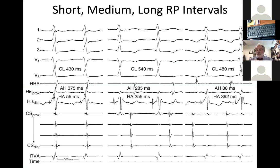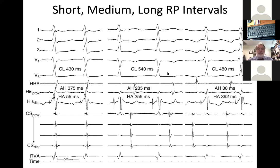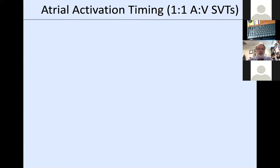Block may not be permanent. It may be catecholamine-dependent and awaken latent conduction—this more likely helps the AV node than an accessory pathway. The AV node can awaken with catecholamines easily. If there's no retrograde conduction at baseline over an accessory pathway, chances are there is none at all—there are only a handful of cases in the literature where catecholamines unmask retrograde accessory pathway conduction.